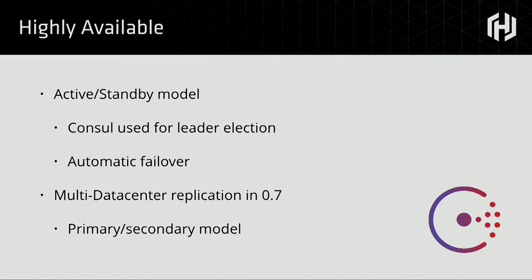There's high availability built into the system since 0.1, using an active-standby model. You can use Consul, etcd, Zookeeper, and other backends to do leader elections, running many instances of Vault. If the primary fails, it falls over to one of the secondaries — giving you a good availability story, going back to that CIA trio. Multi-data center replication, which landed in the latest enterprise version, gives you a primary-secondary model so you can actually span multiple geos.